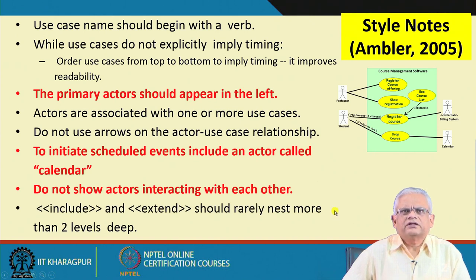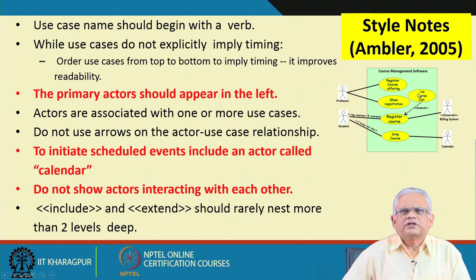We had discussed about factoring use cases using include, extend, and generalization. It often leads to good quality design during the design process. But then this should be either a single level or at most two levels. Typically it should be single level, but in more complicated cases maybe two levels — not more than that, because it unnecessarily complicates the diagram and designing becomes difficult.